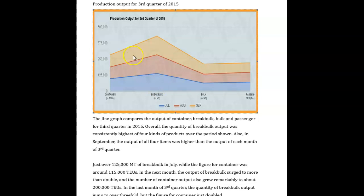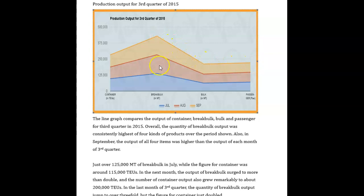You can tell it's a stacked chart because all of this area is shaded in. If it was just a traditional line graph, this would not be shaded in. What you're looking at, just to say it one more time, is the third quarter. This is the total, and then each color represents what each month contributed to this total.